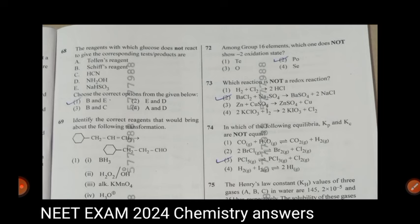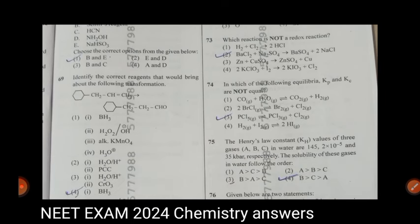Question 72, among group 16 elements, which one does not show minus two oxidation state. Answer is second one. Which reaction is not a redox reaction? Question 73, answer is second one. Question 74, in which of the following equilibria? Not equivalent. Answer is third one.